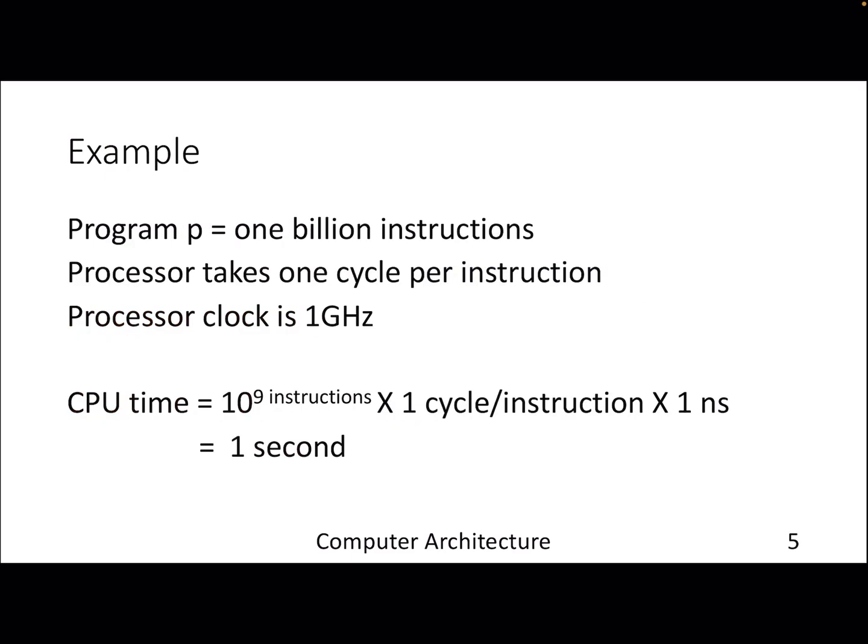To understand the notion of runtime and what exactly we mean when we say we should improve the CPU or cycle per instruction, let's take an example. Let's have a program p which has 1 billion instructions. This is a pretty small number; your actual programs will have hundreds of thousands of billions of instructions. Let's assume the processor takes 1 cycle per instruction, so the CPI is 1.